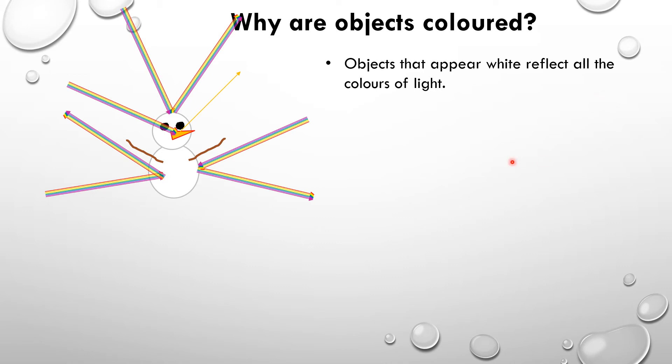Notice if the light ray hit the wee carrot nose of the snowman, all of the colours apart from the orange one would be absorbed, and the orange colour is reflected, and that's why the nose of this snowman looks orange.